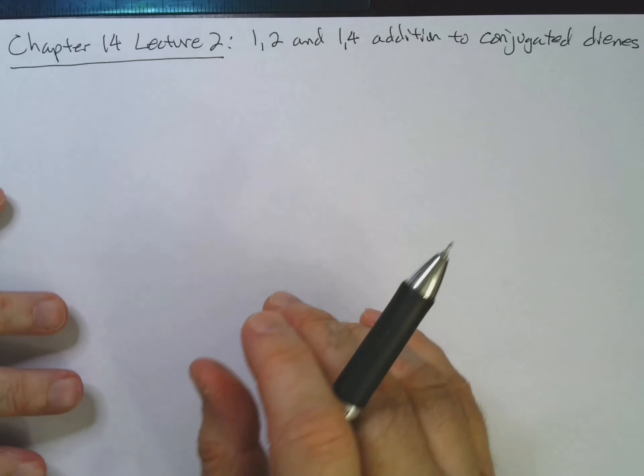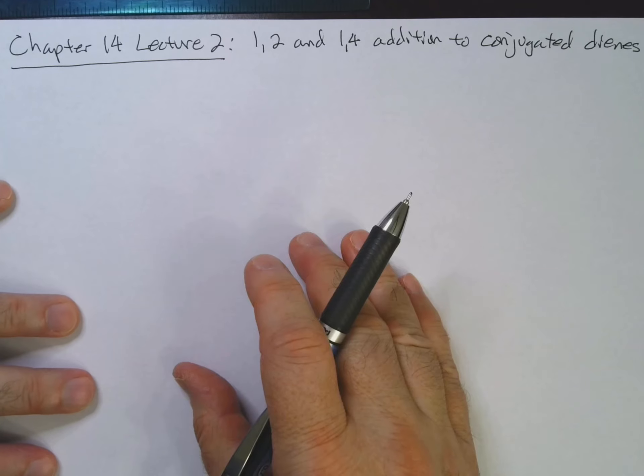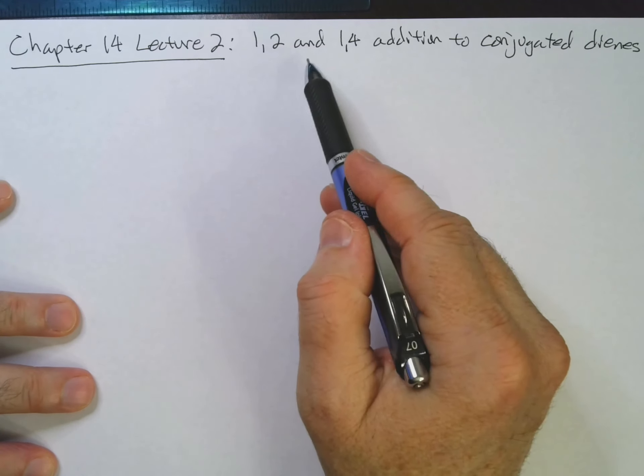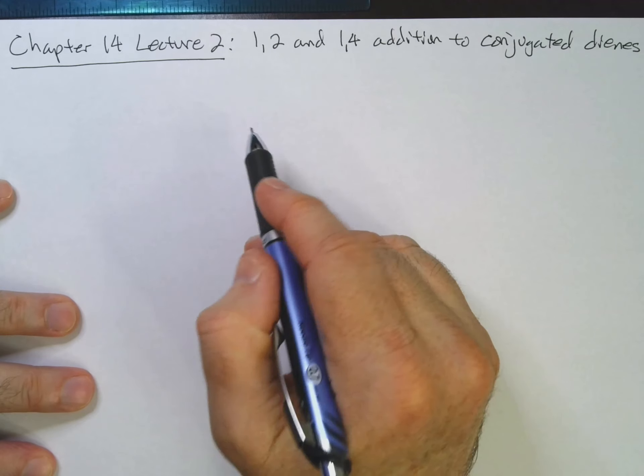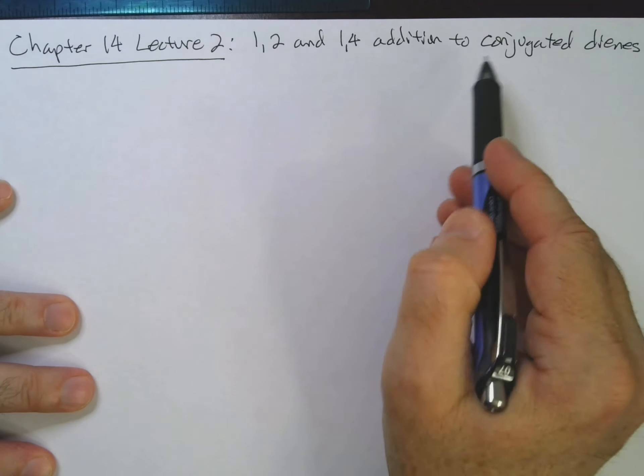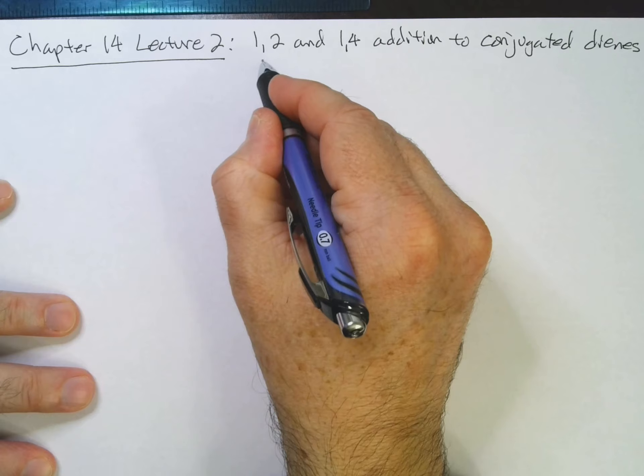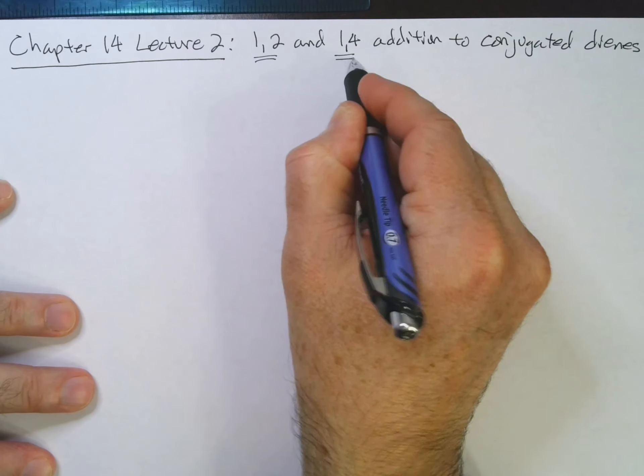Hi, Dr. P here again. And in this video, we'll go ahead and take a look at the addition of, in this case, HBr, but addition to conjugated dienes. And there's two different kinds that we're going to look at: 1,2, and 1,4 addition.